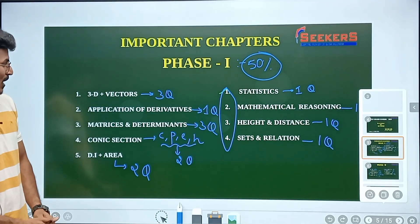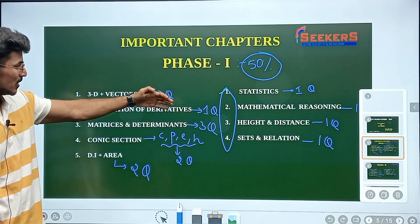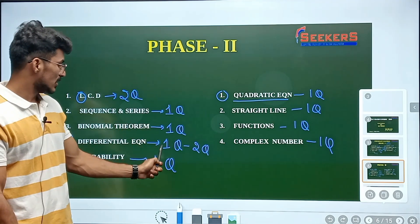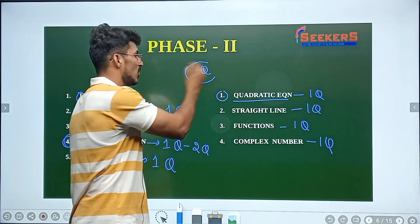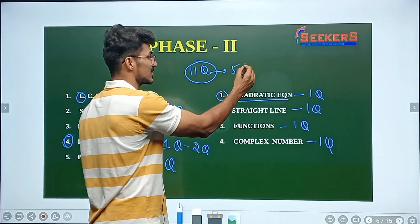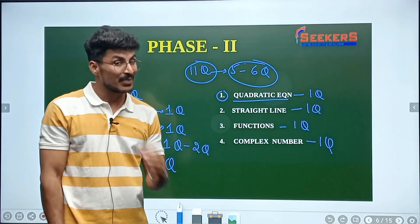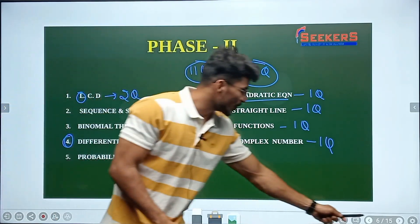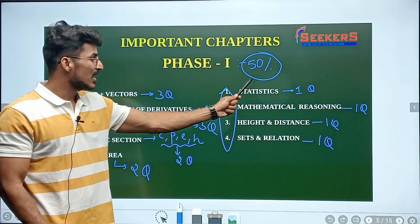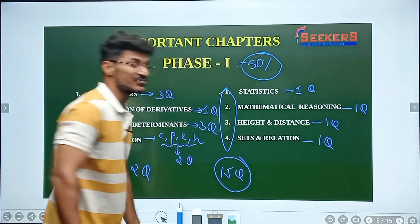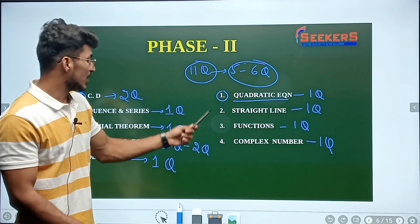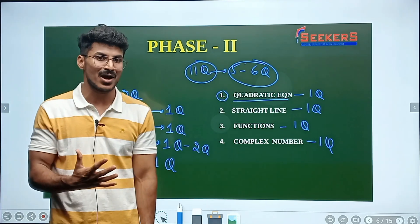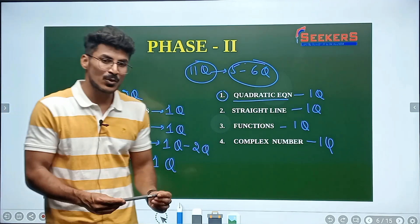So fifty percent of the chapter questions are covered from slide one — fifteen questions. Slide two gives you around eleven questions. From those eleven, if you solve five to six, that gives you at least twenty questions solved. Twenty questions into four marks each equals eighty marks — that's a pretty good score. This is what the session is all about. Thank you.